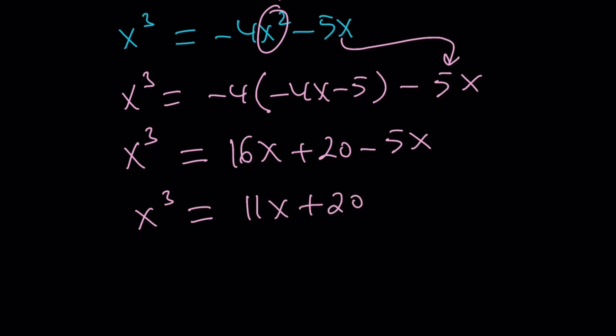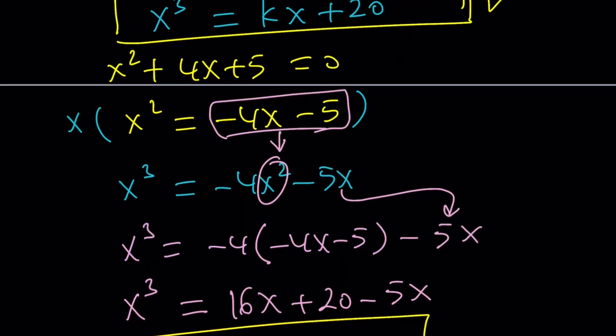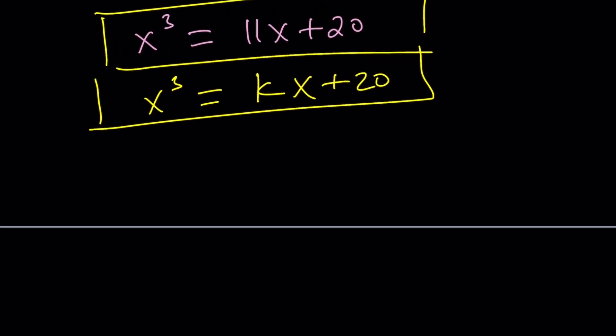This will be 16x plus 20 minus 5x. That is x cubed equals 11x plus 20. Awesome. This is awesome because we already had something for x cubed: kx plus 20. Let's put those together. kx plus 20 equals x cubed, which equals 11x plus 20. If you cancel out the 20s, this tells us k equals 11.